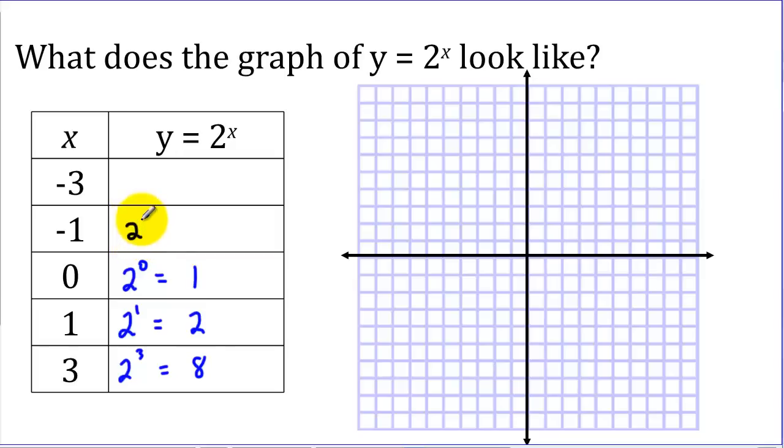So 2 to the negative 1. Remember from our exponent properties, a negative exponent can be converted to a positive exponent by taking the reciprocal. So we have 1 half or 0.5 here. And if we do negative 3, that's going to be 1 over 8, which is approximately 0.125.